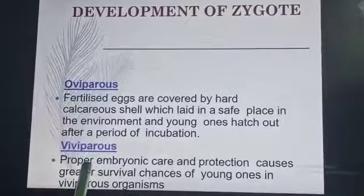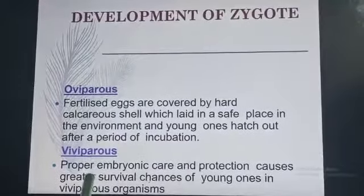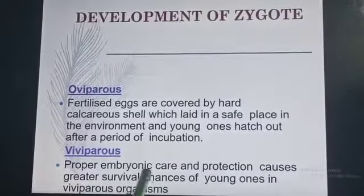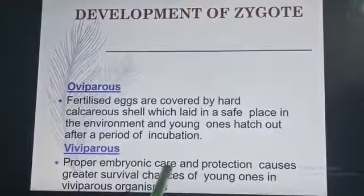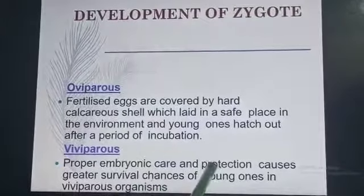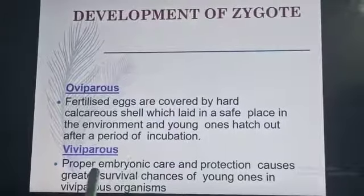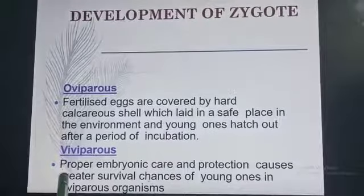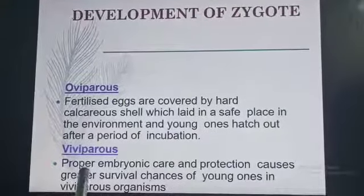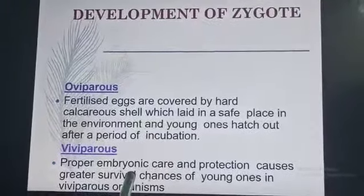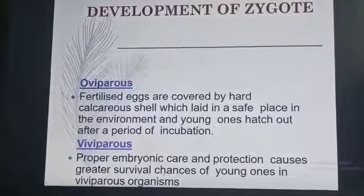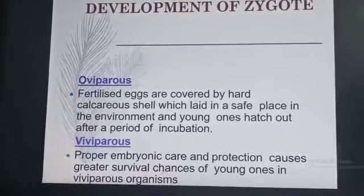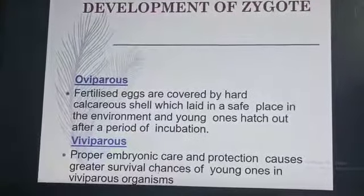In viviparous animals, the zygote develops into an embryo with proper embryonic care and protection provided by the parent body, for the purpose of greater survival. That is why viviparous animals have a greater chance of survival.